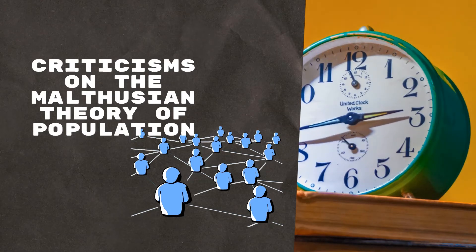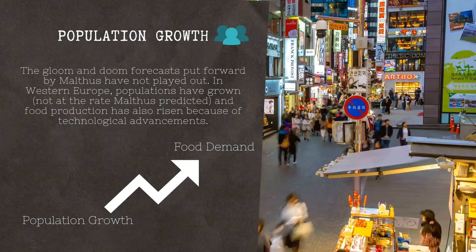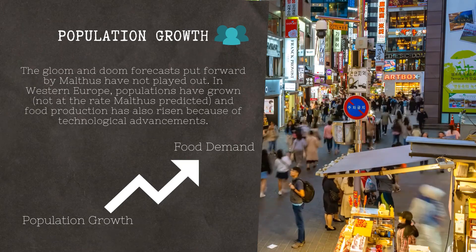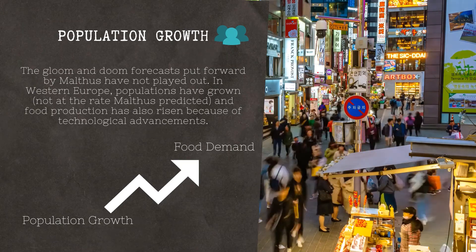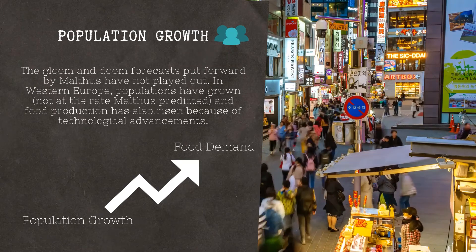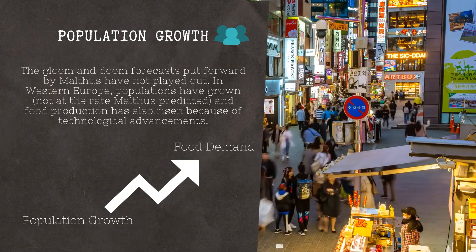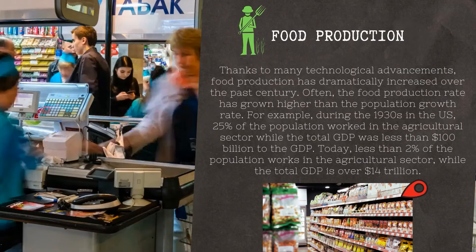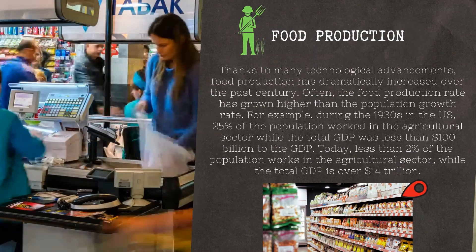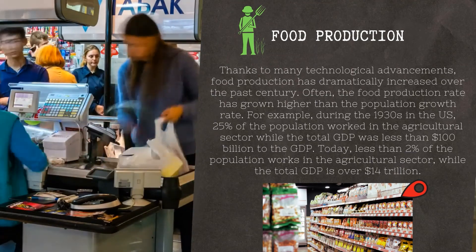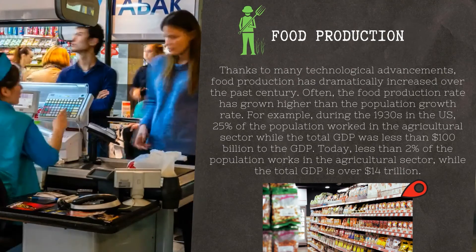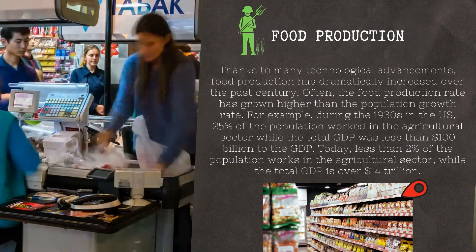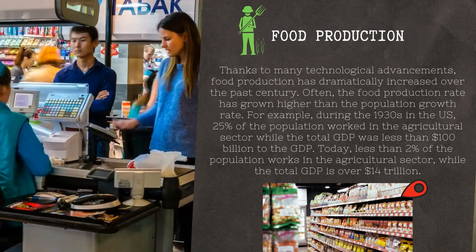Criticisms of the Malthusian theory of population: First, population growth — the dire forecasts put forward by Malthus have not manifested. In Western Europe, populations have grown, but not at the rate Malthus anticipated, and food manufactured has also risen because of technological developments. Second, food production — because of technological innovations, food production has significantly improved over the previous century, and at times the food production rate has become higher than the population growth rate.